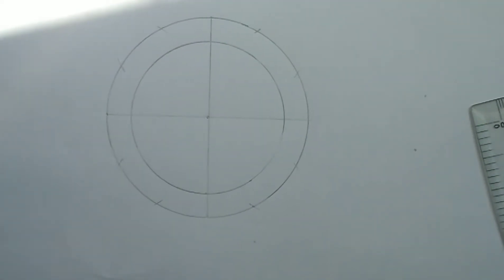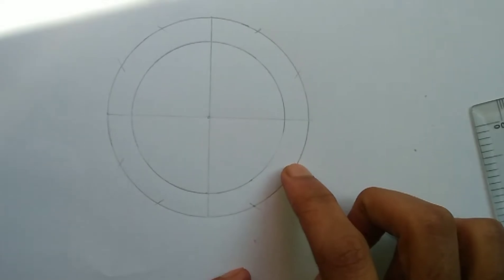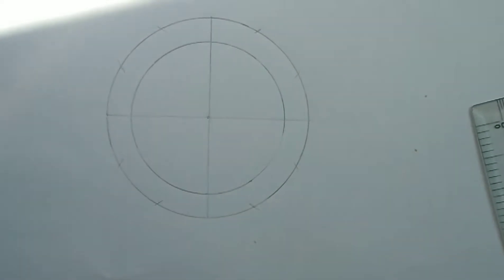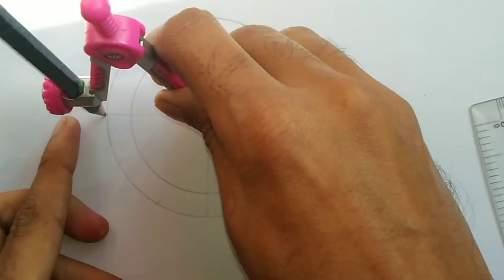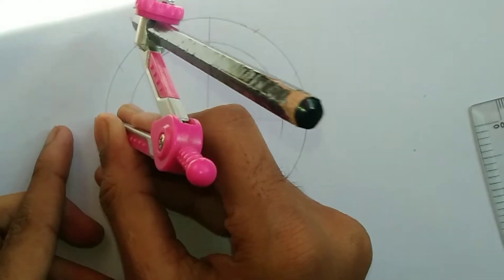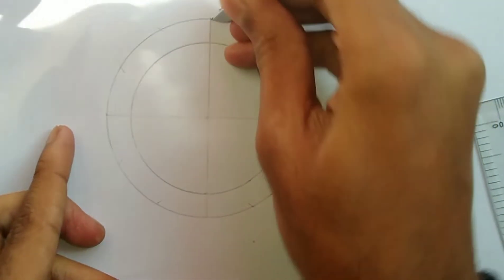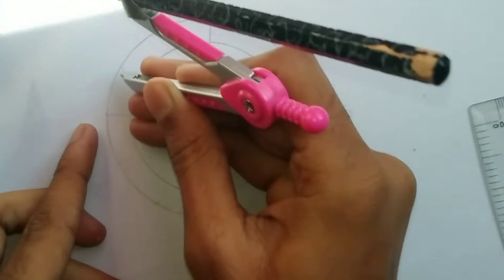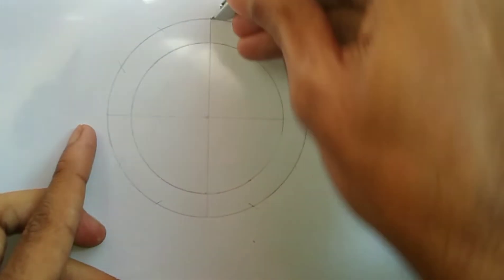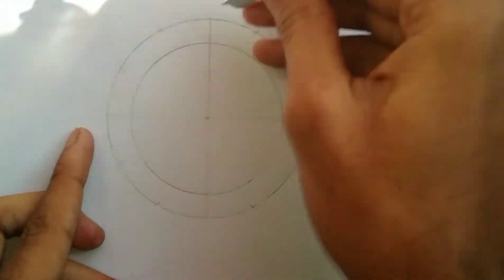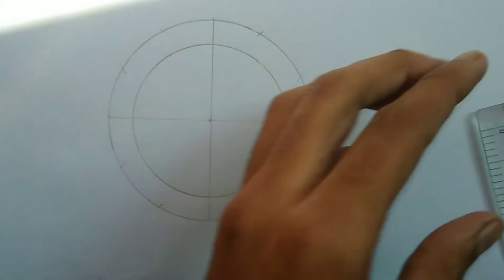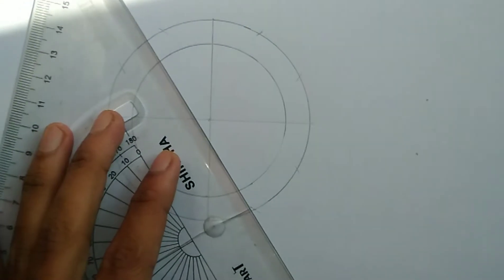The circle should be divided into equal parts. If we divide into two parts, then divide further. On the concentric circles, we mark points at each division. These points are then used to draw the ellipse.